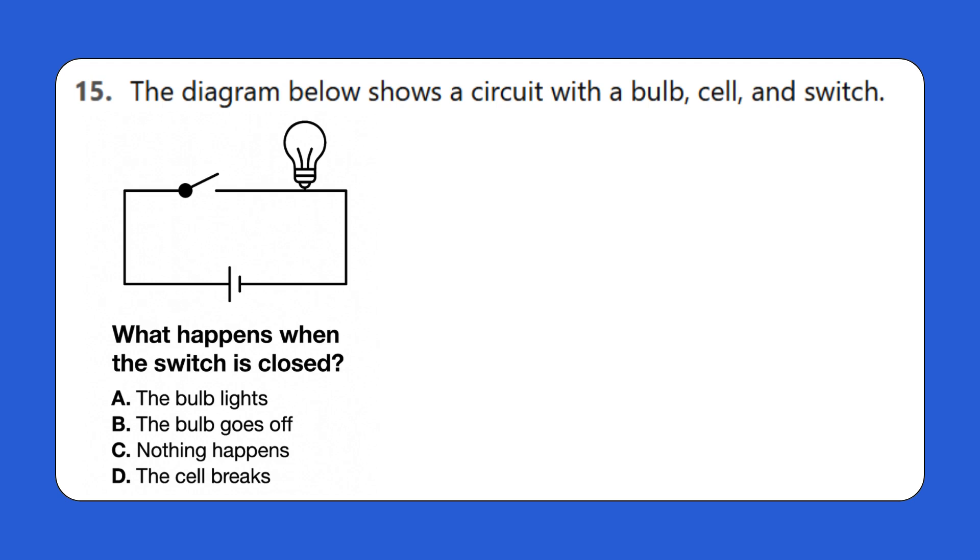Question 15: The diagram below shows a circuit with a bulb, cell, and switch. What happens when the switch is closed? A. The bulb lights, B. The bulb goes off, C. Nothing happens, D. The cell breaks.